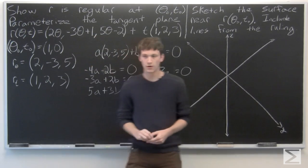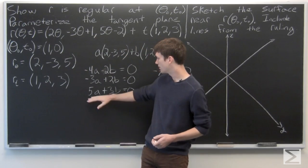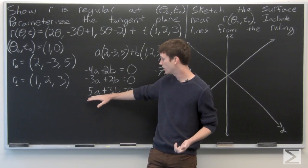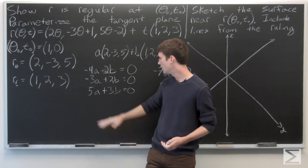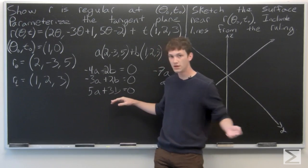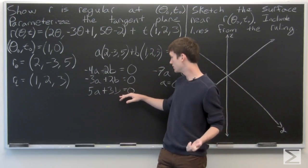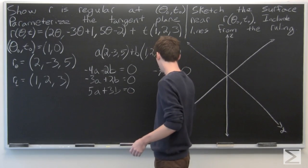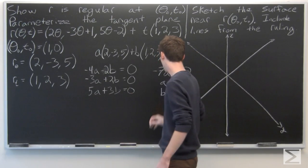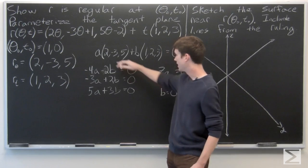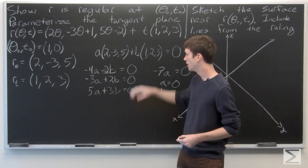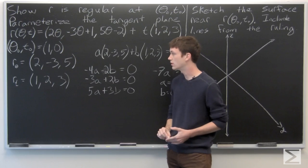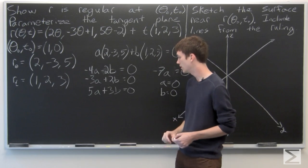Since a = 0, we can plug into any of these equations. For example, 3b = 0, which implies b = 0 as well. So we've shown that the only solution is when both a and b are equal to 0, and therefore r is regular.